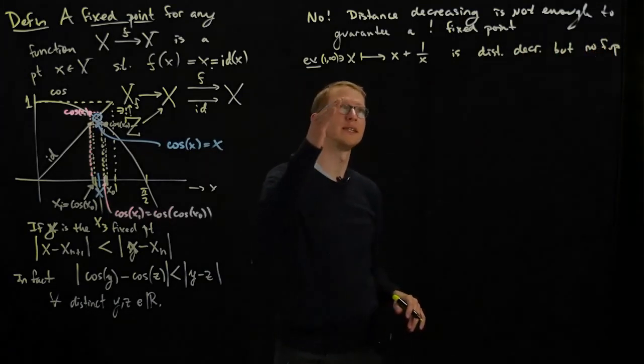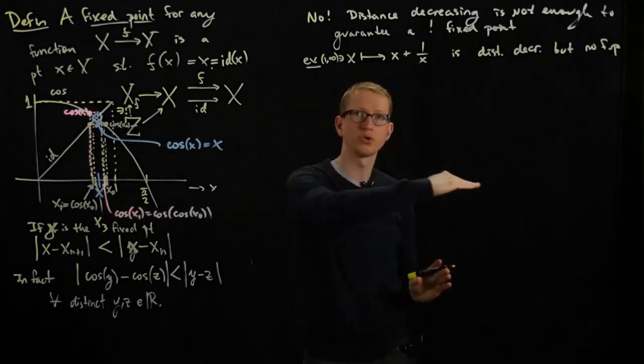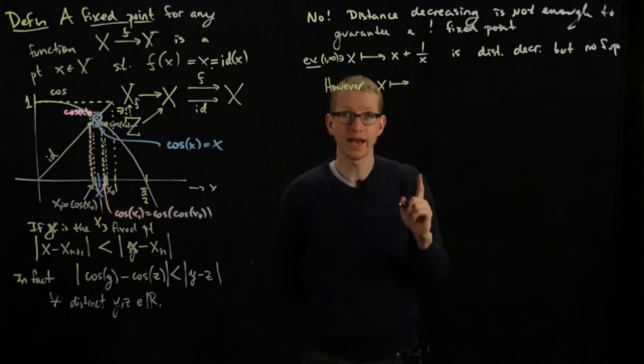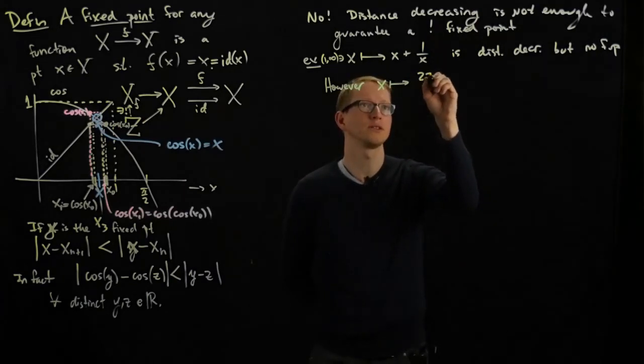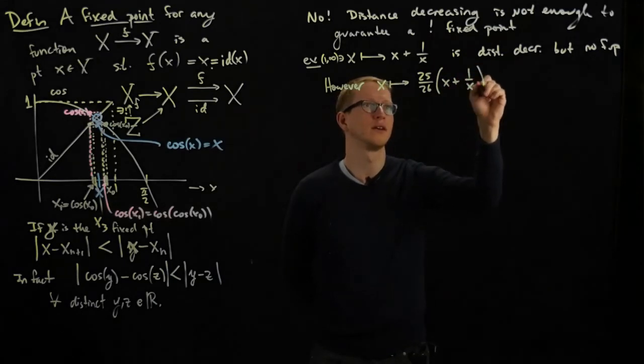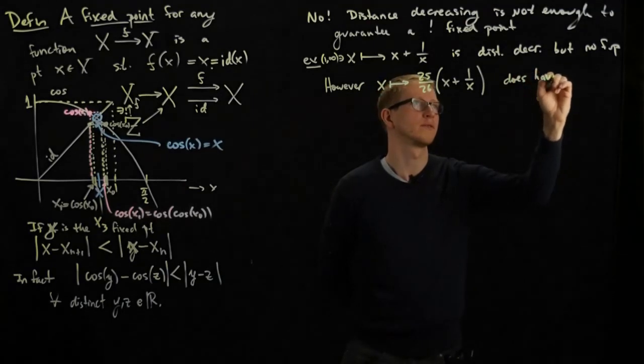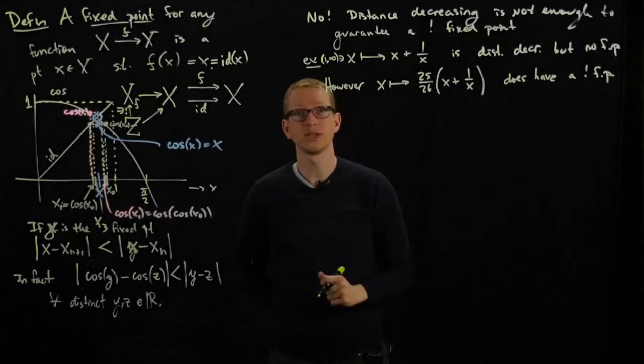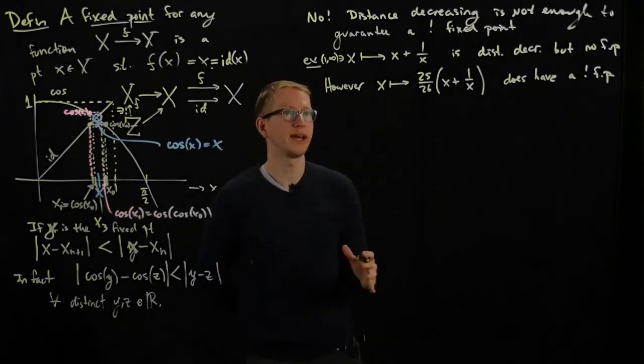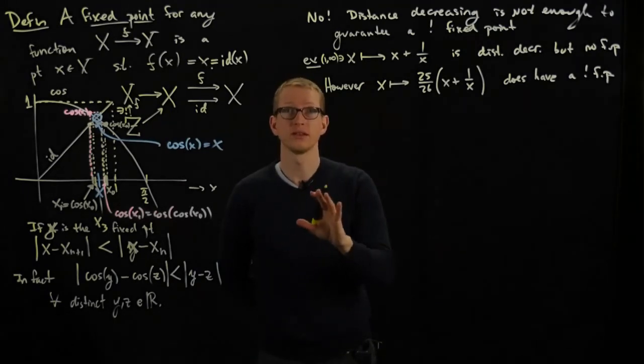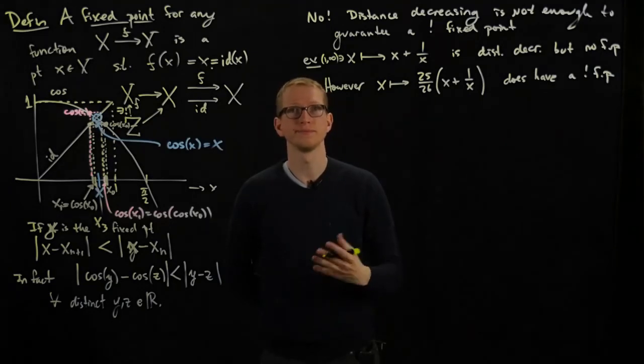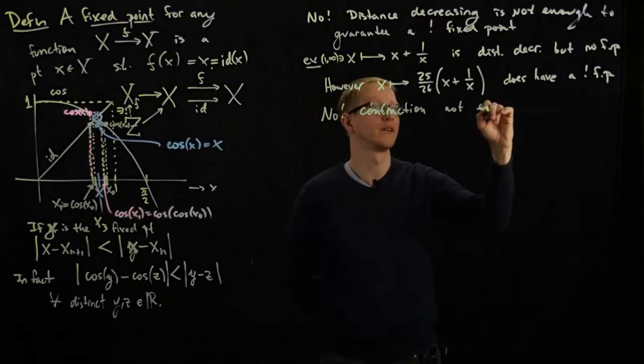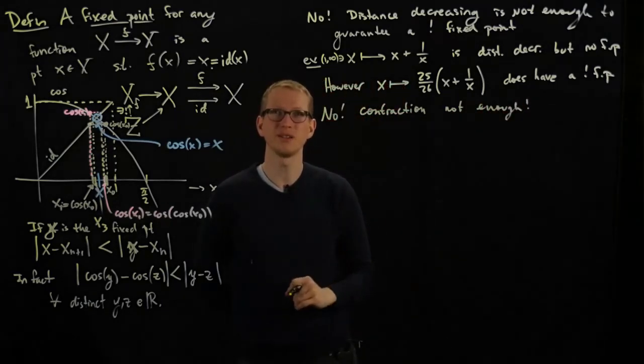And you might wonder, part of the reason is because the fixed point looks like it's actually approaching infinity. However, if I slightly modify this function and multiply by a factor that's strictly less than 1 but still greater than 0, such as 25/26, this does have a unique fixed point. Why is that? Well, not only is this function distance decreasing, but it's actually also a contraction. So you might ask, is a contraction on a metric space sufficient to guarantee the existence of a unique fixed point? Turns out the answer is no, again. Contraction not enough.